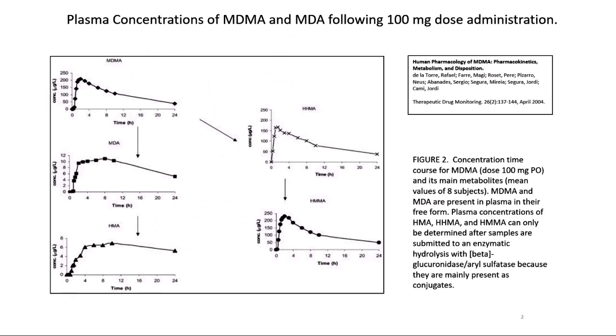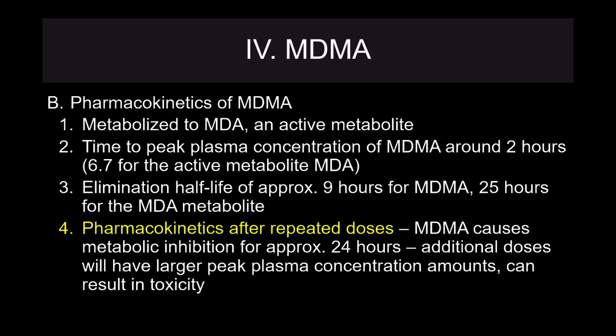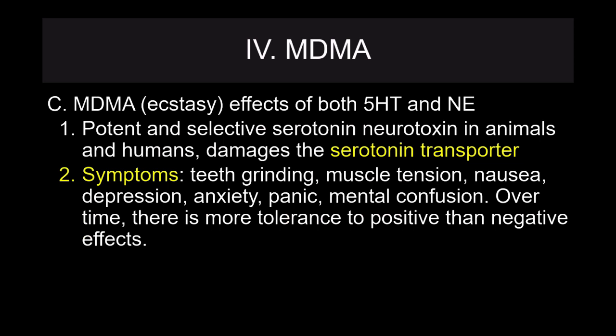One of the issues with repeated dosing is that MDMA causes metabolic inhibition for about 24 hours. So additional doses will have a larger peak plasma concentration. If you take another dose of ecstasy 10 hours into the experience, that second one is going to hit you a lot harder and take a much longer time before you come down.